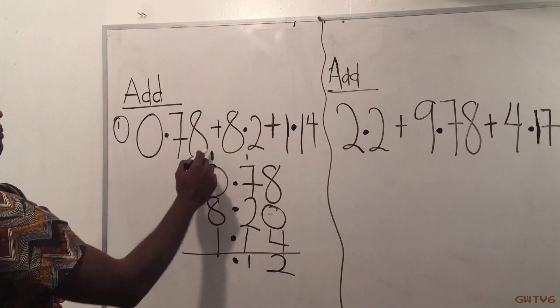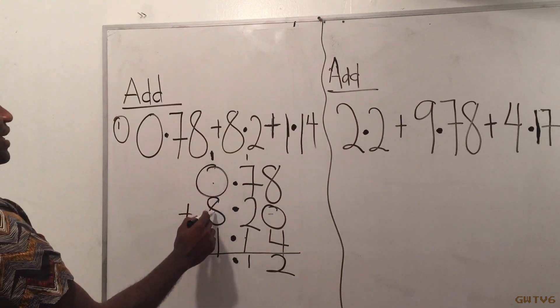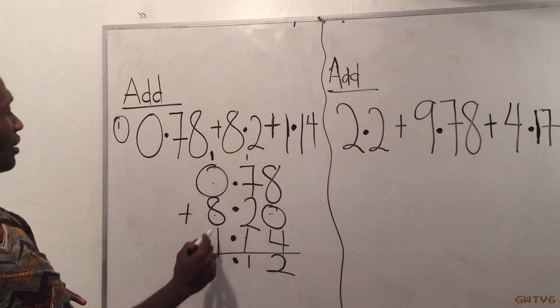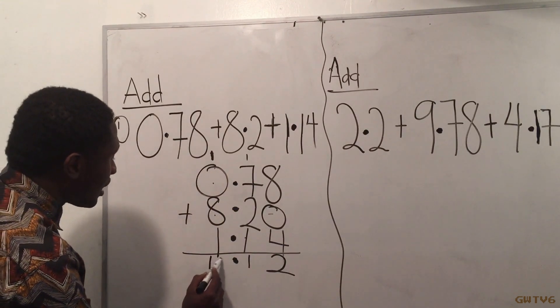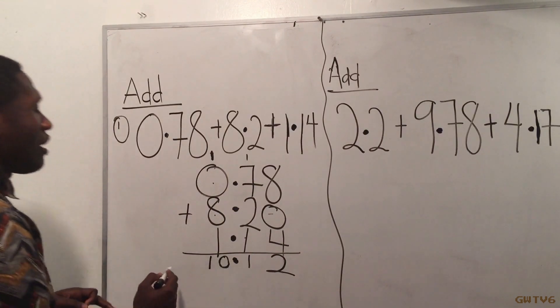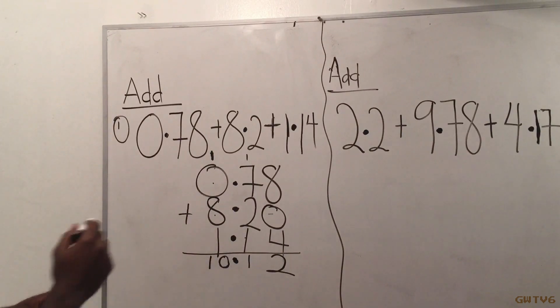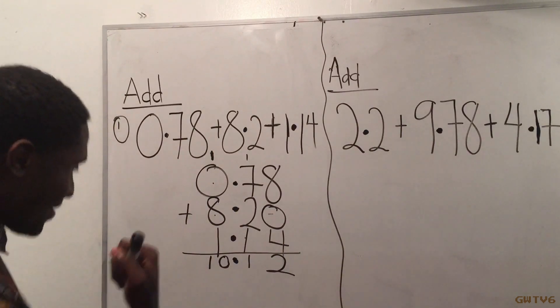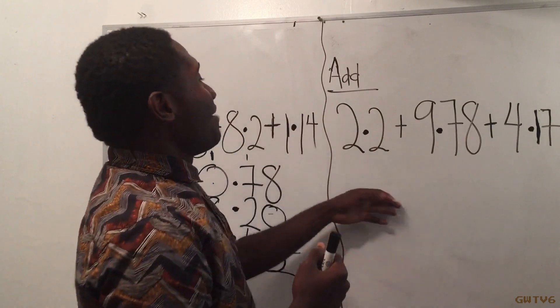I have 1 plus 0 is 1, plus 8 is 9, plus 1 is 10. I put my 10 right here, so I have 10.12 and that's it. Let me see if I really got this.